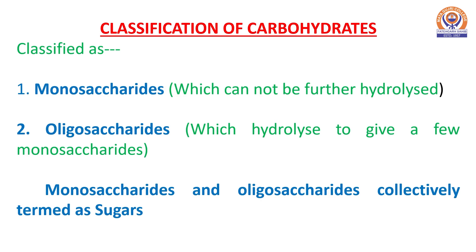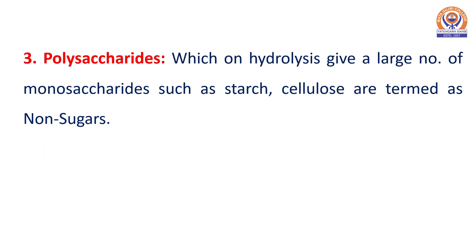Now, what is the classification of carbohydrates? We can classify carbohydrates into monosaccharides, which cannot be further hydrolyzed. Second are oligosaccharides, which upon hydrolysis give a few monosaccharides. Monosaccharides and oligosaccharides are collectively termed as sugars. The third category is polysaccharides, which upon hydrolysis give a large number of monosaccharides — such as starch and cellulose — and are termed as non-sugars.